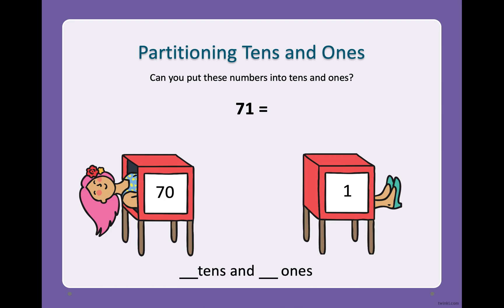Right so the number 71 is 70 and one. Now we need to see how many tens and how many ones. Now remember 70 is seven groups of ten and one one. Just like that, seven tens and one ones.